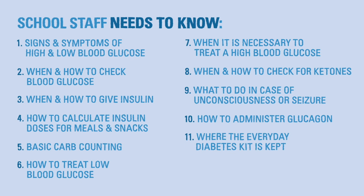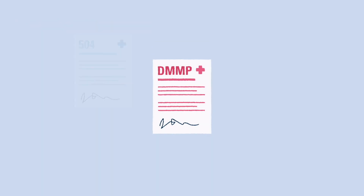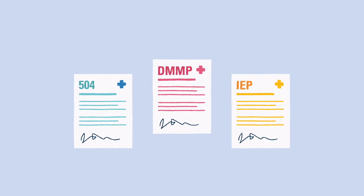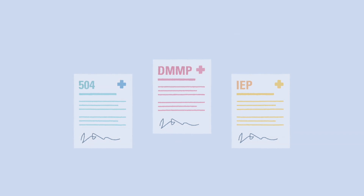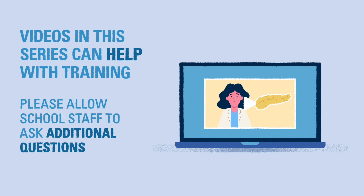Staff also need to know where the everyday diabetes kit is kept, and the student's rights and accommodations related to diabetes, including the DMMP, 504 Plan, and/or IEP. Videos in this series can help with training school staff on these topics, but please allow school staff to ask questions and involve the diabetes care team with any concerns that may come up.